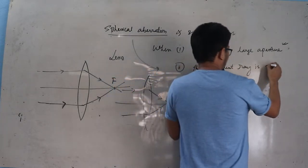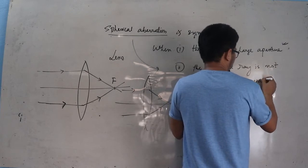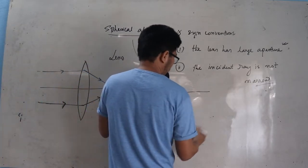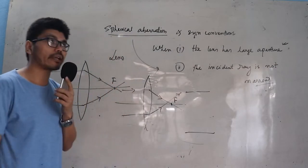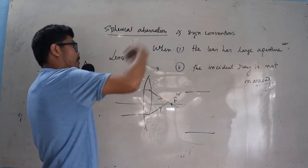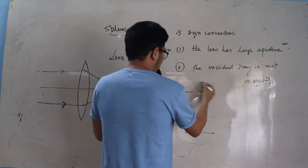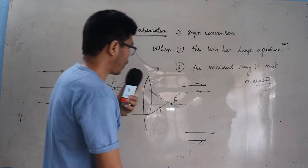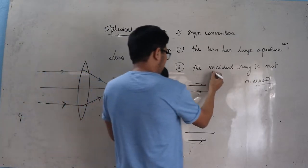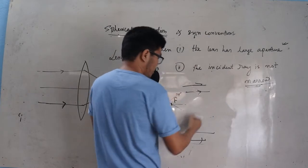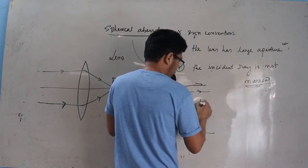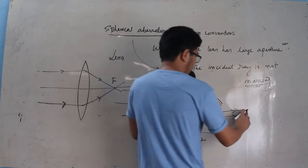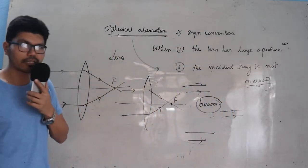When the incident ray is not narrow — like a wide source of light, such as light entering a room from a wide source — when the light has a wider source, it can produce spherical aberration. However, if the incident light is narrow in nature, just like a fine beam, a narrow beam of light, the spherical aberration can be avoided.